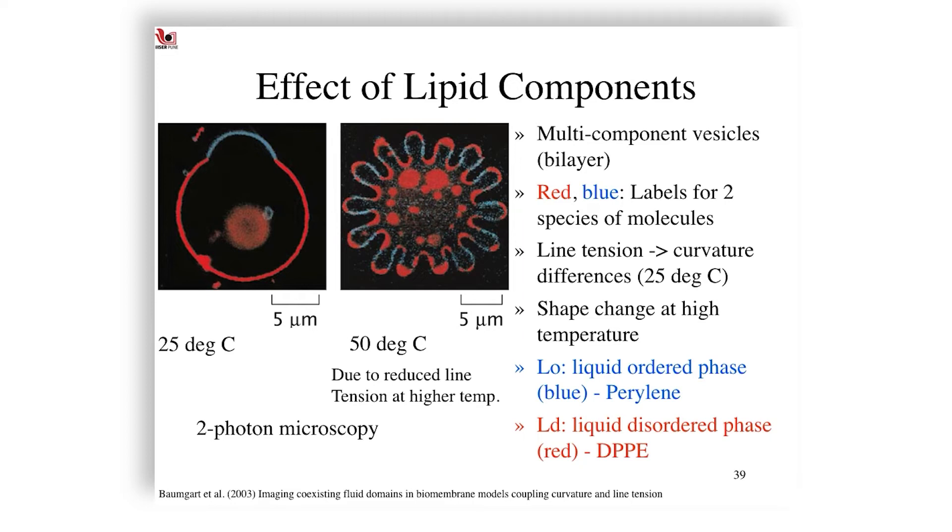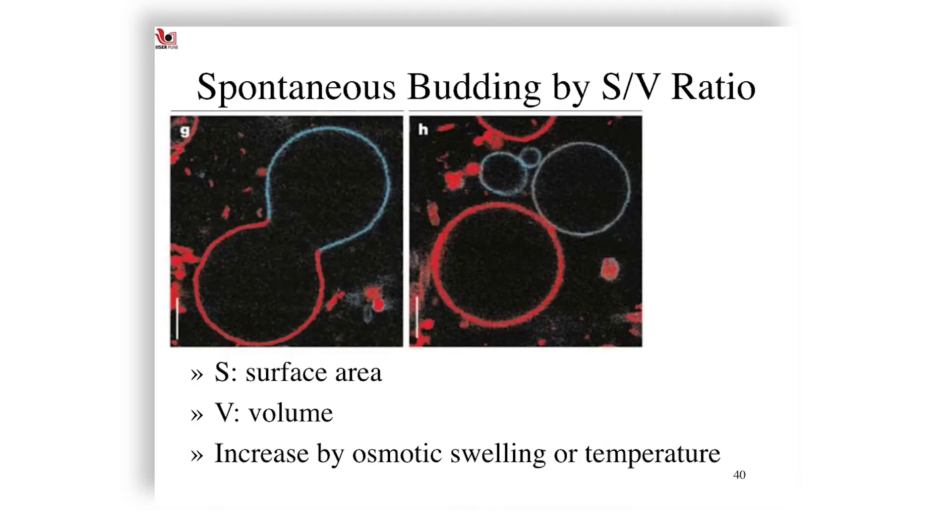These kind of shape changes are very interesting because they tell us that while on the one hand from our cell biological inference you need intracellular mechanics, you need signaling to form structures, this is telling you that lipid itself, the lipid composition itself has amazing wide dynamics which can actually spontaneously form these kind of shapes. Indeed, spontaneous budding by modifying the surface area to volume ratio by osmotic swelling or temperature is used frequently to generate giant unilamellar vesicles of a desired size and shape.